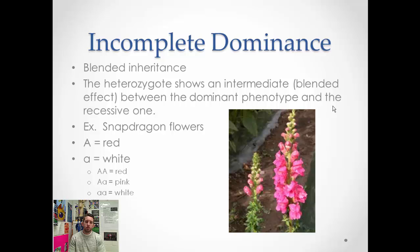Incomplete dominance is a situation of blended inheritance — the heterozygote shows an intermediate blended effect between the dominant phenotype and the recessive one. The example for incomplete dominance is snapdragon flowers. The dominant phenotype is red, so we'll say big A for red, little a is white. Homozygous dominant shows red, homozygous recessive shows white, but the heterozygote shows an intermediate: pink.